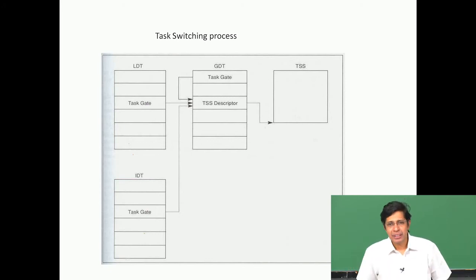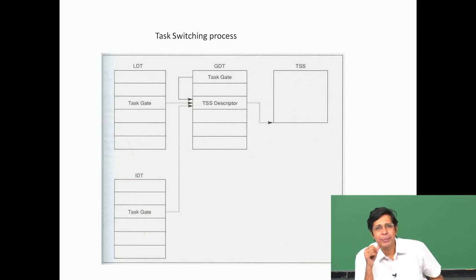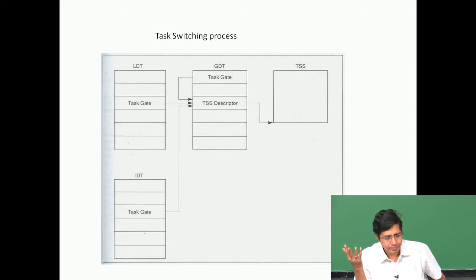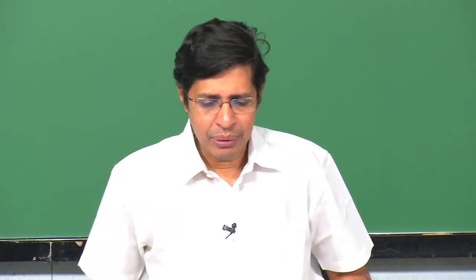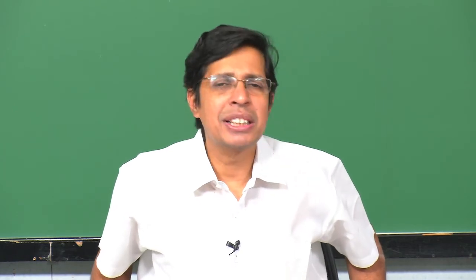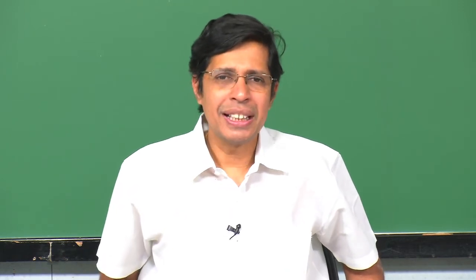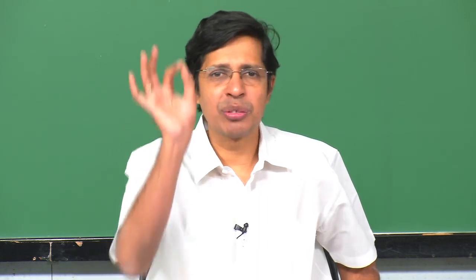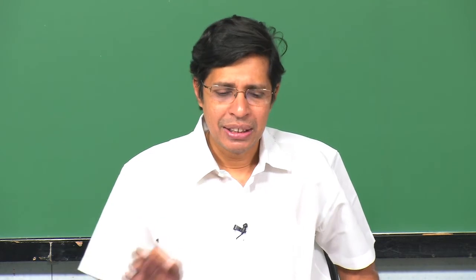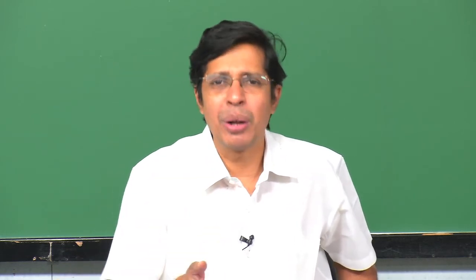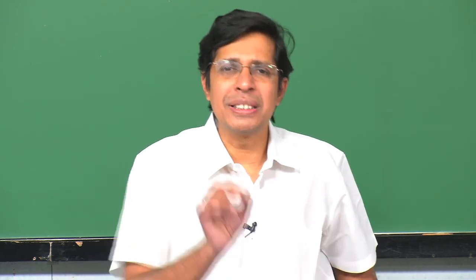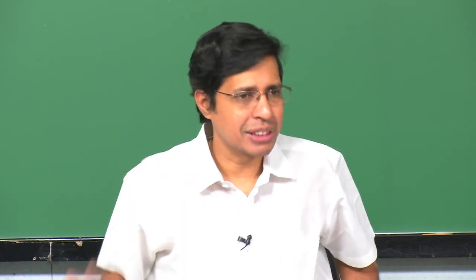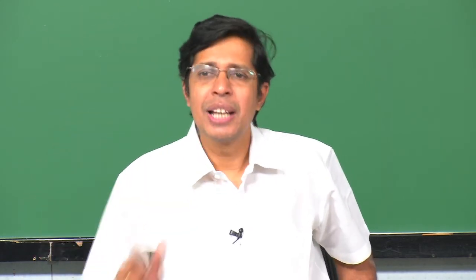For every interrupt — if I have 256 interrupts — I need to know where the interrupt service routine is located and what privilege level it will execute at. This is given in what is called the Interrupt Descriptor Table, or IDT. In the IDT, there are two things: it gives you a selector for a code segment and an offset within that code segment. So it tells you to go and start executing from that offset within that code segment, and it also gives you a privilege level.